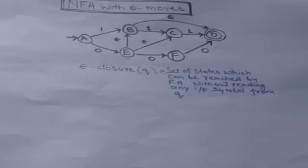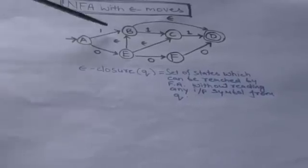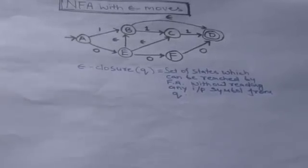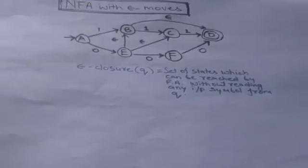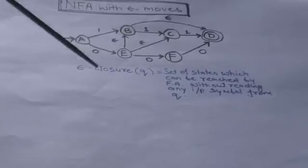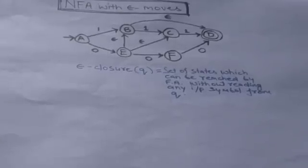Welcome to this tutorial. We will discuss NFA with empty moves. Those NFA which have empty transitions are called NFA with empty moves. The NFA discussed in previous tutorials were NFA without empty moves. One of the most important terms associated with NFA with empty moves is empty closure of a state. Empty closure of a state is the set of all states in which the machine can jump from that state without consuming any input symbol.